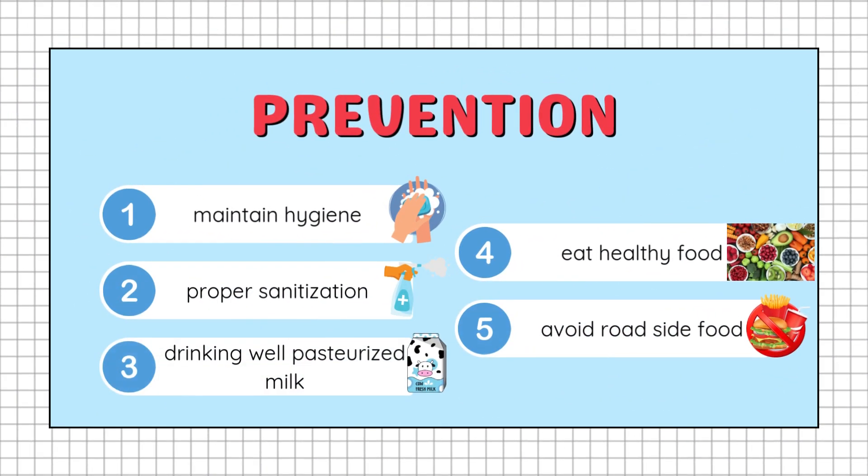Preventions from getting infected include maintaining hygiene by washing hands with soap properly after coming from the washroom, proper sanitization of toilets, sewers and the neighborhood, drinking well-pasteurized milk, eating healthy food, and avoiding roadside food.